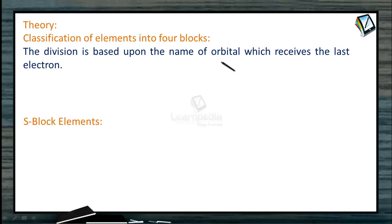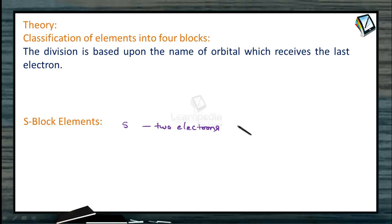The first block is the S-block elements. S-block elements indicate that the differentiating electron, or the last electron of the element, is entering the S orbital. Since the S orbital has the capacity to hold two electrons, S-block elements can form two groups: one group from the S1 configuration and another from the S2 configuration.